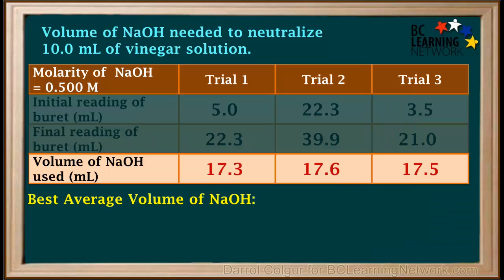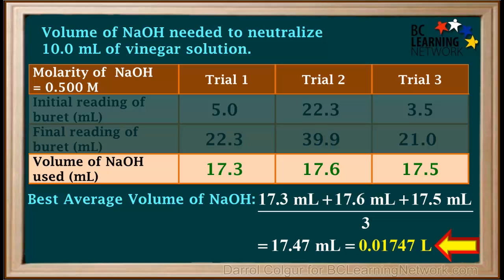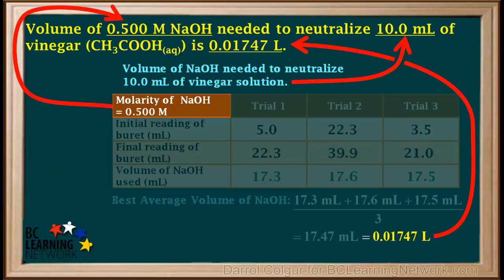Now we need to calculate the best average for the volume of NaOH used. In this case, the values are all quite close, so we'll use all three of them to calculate the average. The average value is 17.3 plus 17.6 plus 17.5 divided by 3, which comes out to 52.4 milliliters divided by 3, or 17.47 milliliters. We'll keep one extra significant figure in our calculations and round to three significant figures in the last calculation. We'll divide 17.47 milliliters by 1,000 to convert it to 0.01747 liters.